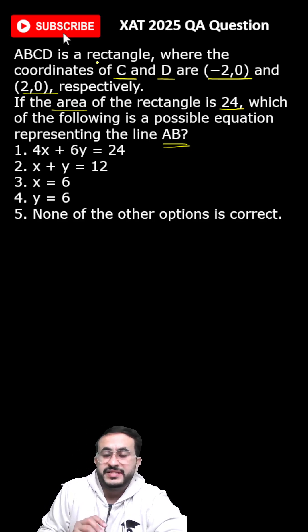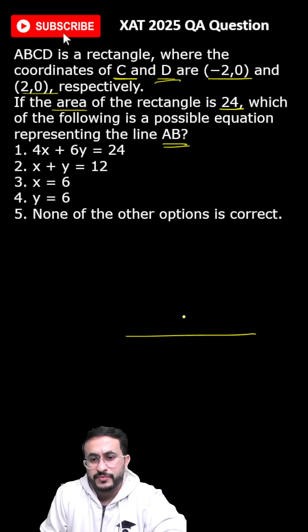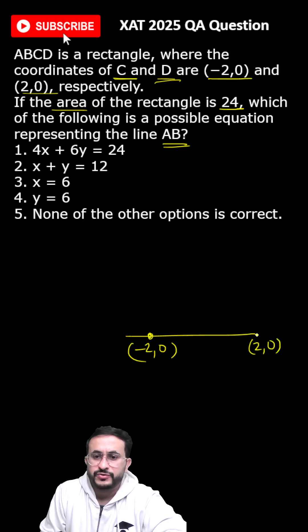So ABCD is a rectangle with C and D coordinates given. Let us plot this on the axis: this is (-2,0) and this is (2,0). This is C and D.